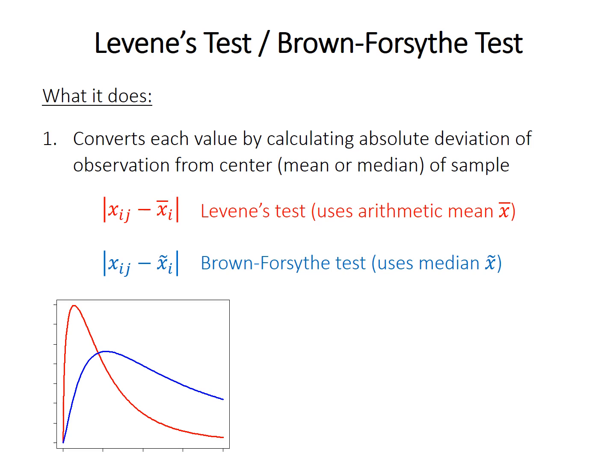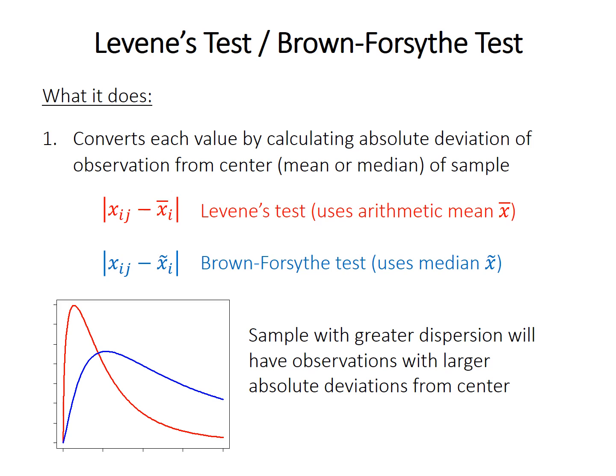Standard deviation or variance aren't particularly meaningful terms for non-normal data, so these tests instead calculate the absolute deviation of each data point from the center of its sample. Levene's test calculates the difference between each point and the mean, or often something called the trimmed mean, and the Brown-Forsythe test uses the median instead — the absolute difference between every data point in that sample and the median of that sample. The reasoning is that samples with greater dispersion will have data points further away from the center, and so will have larger absolute deviations.